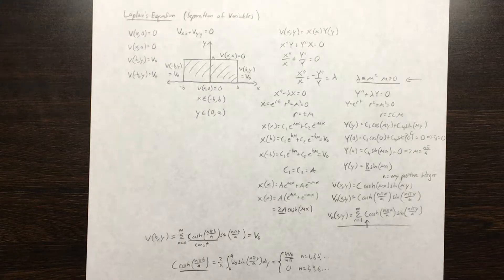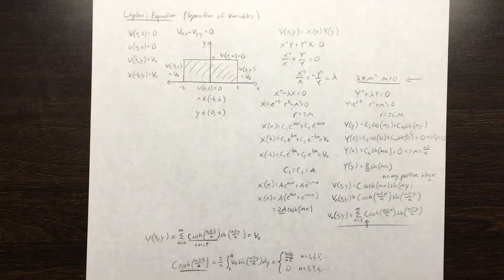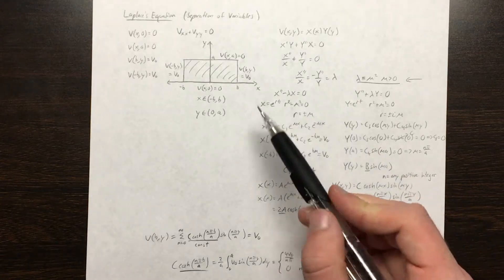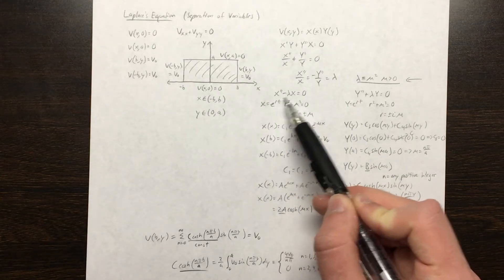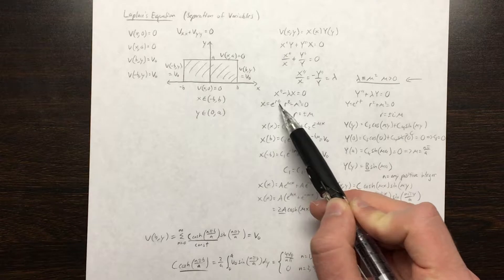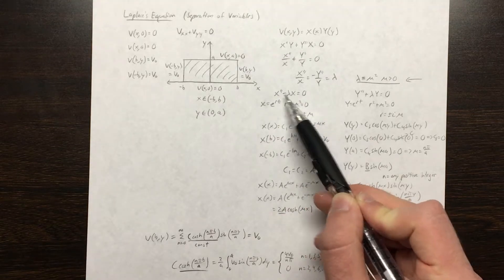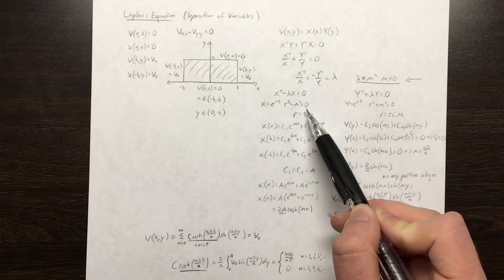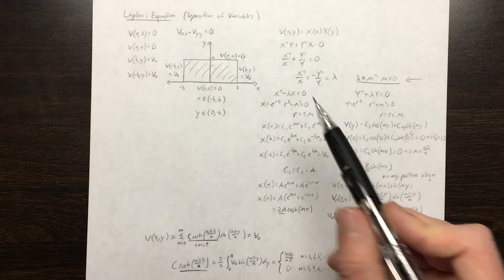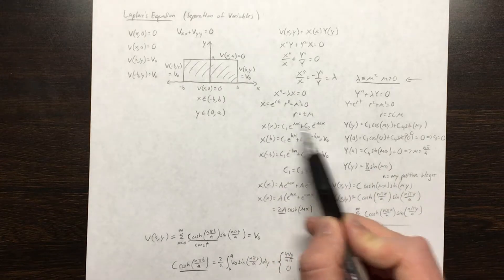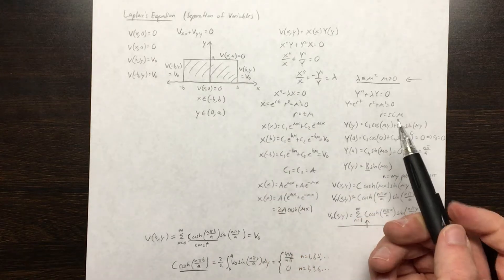For the x ODE, we assume a solution of the form e^(rt), take two derivatives, substitute in, and get the characteristic equation. This gives r = ±mu, so we get a solution in the form of exponentials. For the y ODE, we assume a solution of e^(rt), substitute in, and get the characteristic equation r² + mu² = 0, where r = ±i·mu, giving a solution which is a combination of cosines and sines.